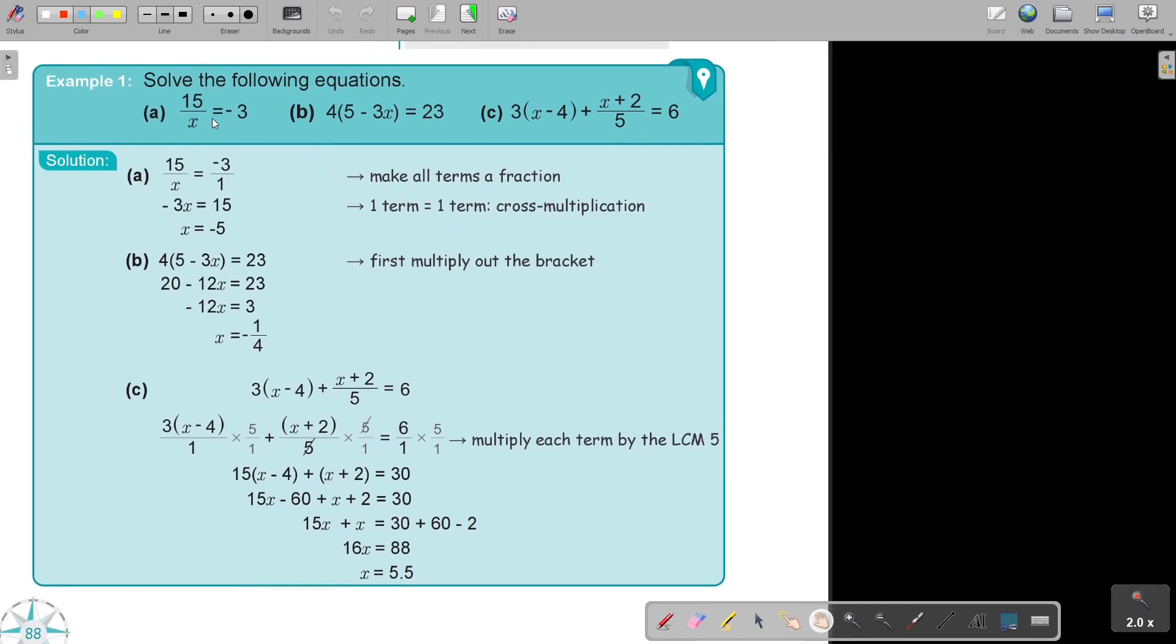This is a fraction. Just make this also a fraction by putting it over 1. Then cross multiply. So if you have one term over one term, you can cross multiply. Then I divide negative 3, and I get the value of X is negative 5. I can test it by saying 15 divided by negative 5 will be negative 3.